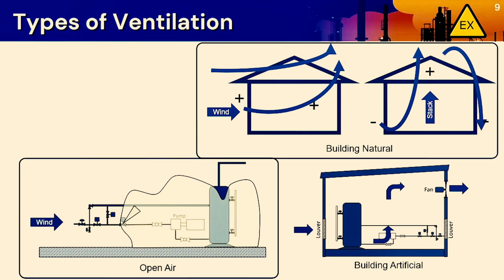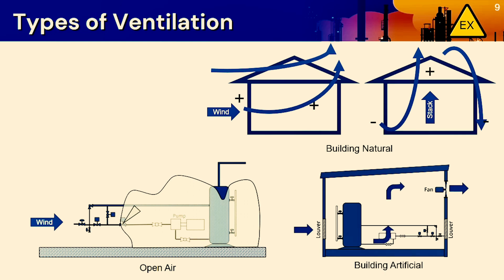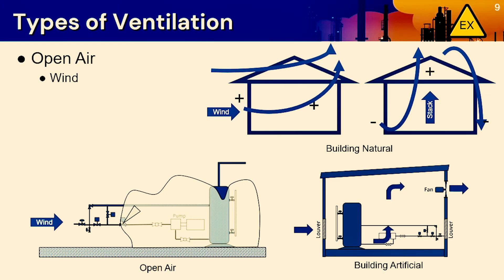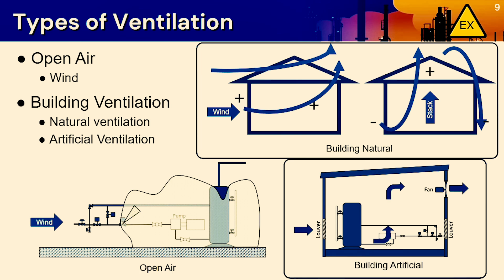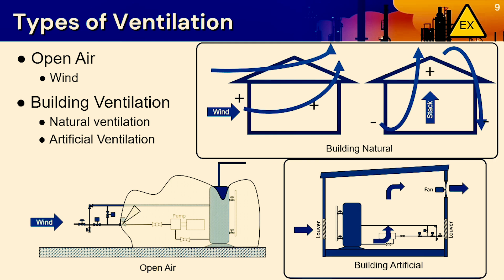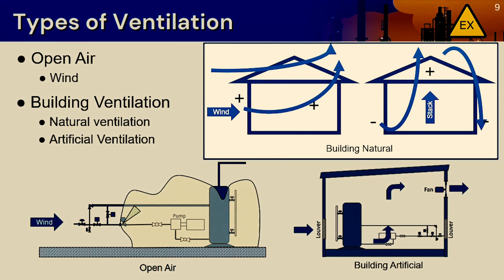Ventilation can be natural or artificial, depending on the application. In open air situations, air movement is mostly provided by wind currents, which requires us to estimate what the wind velocity might be. In enclosed applications, air movement may be achieved by natural or artificial means. Natural air ventilation may be achieved through pressure differences induced by wind or temperature gradients within the enclosure.